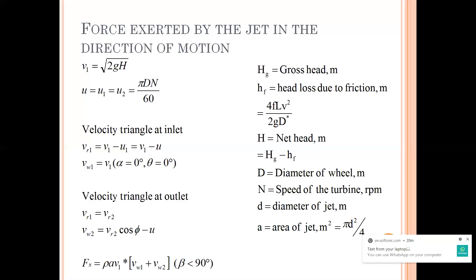Your u — that is your speed of the bucket — u1 = u2 = u is given by pi * D * N / 60. Whenever we have rotational motion, generally your speed N is given in rpm and you calculate u from this formula pi * D * N / 60. Remember this formula — it comes in your design. It would be better to have your notebook when going through this, as these are all formulas helpful in your problems.